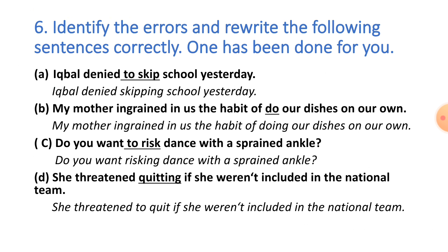Now, student, Exercise 6: Identify the errors and rewrite the following sentences correctly. One has been done for you. A: 'Iqbal denied to skip school yesterday.' — 'to skip' is wrong; use gerund. Corrected: 'Iqbal denied skipping school yesterday.' B: 'My mother ingrained in us the habit of do our dishes on our own.' — 'do' is wrong; use gerund 'doing'. Corrected: 'My mother ingrained in us the habit of doing our dishes on our own.' C: 'Do you want to risk dance with a sprained ankle?' — use gerund. Corrected: 'Do you want to risk dancing with a sprained ankle?'